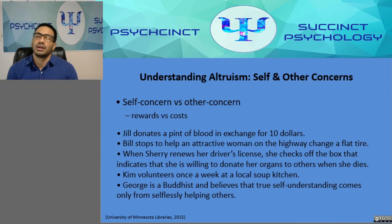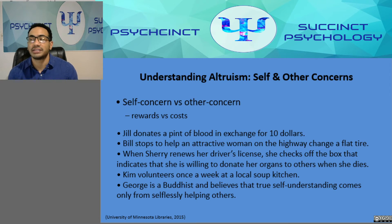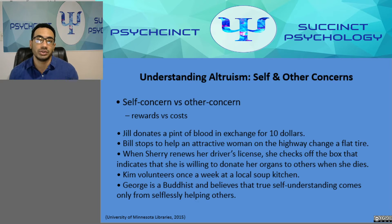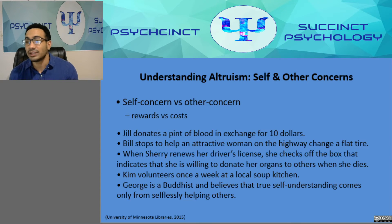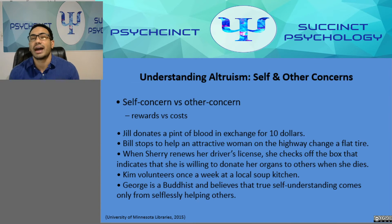Fifth: George is a Buddhist and believes that true self-understanding comes only from selflessly helping others. Analysis: Jill receiving ten dollars means this is not a true altruistic act. Bill helping an attractive woman is likely rewarding to him — perhaps hoping for her number or just enjoying the interaction — so again not altruistic. Sherry donating her organs upon death clearly cannot yield any personal reward, making this an altruistic act.